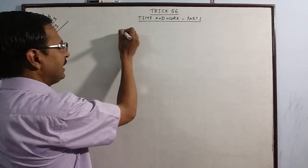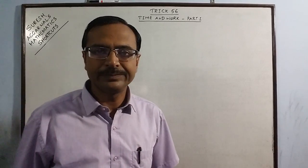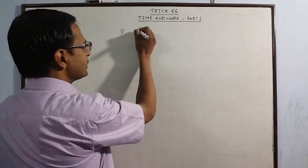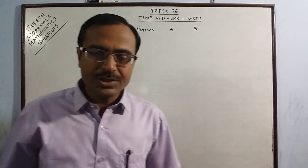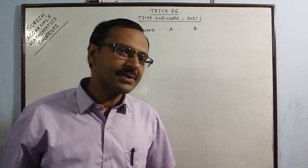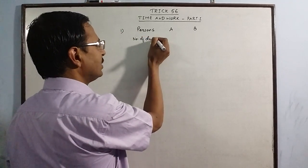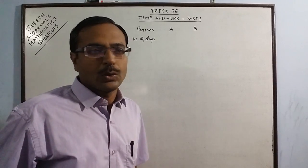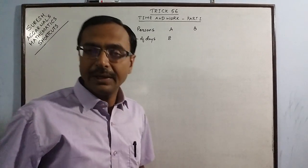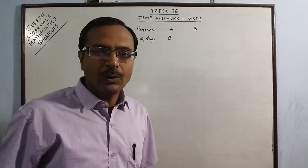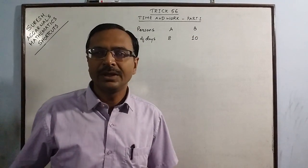The first example is the very basic example through which you can understand what these questions are all about. This question, suppose we have two persons, A and B. In the question you are given that if A does a work alone, he can complete the work - we are given number of days or it can be number of hours also. So here in this case it is number of days. It is given that A can complete the work in 8 days if he does it alone.